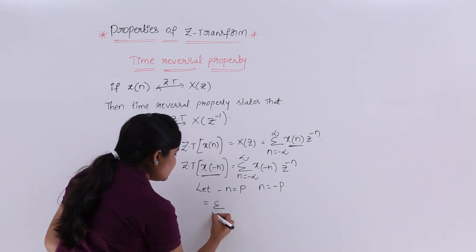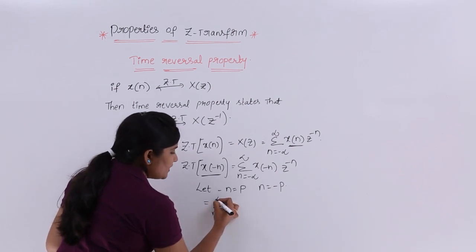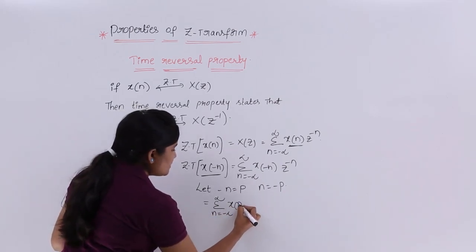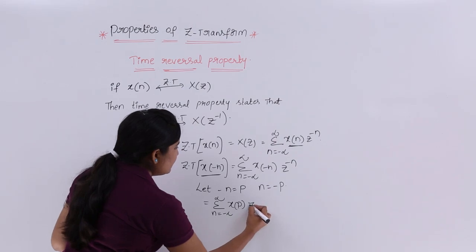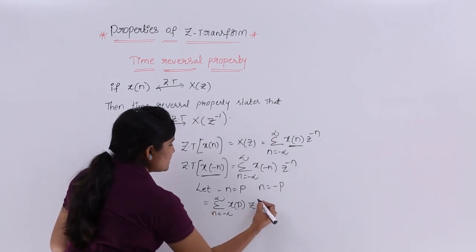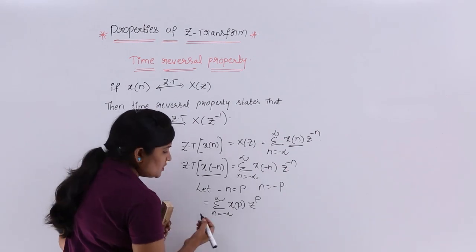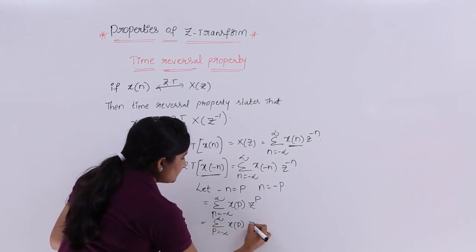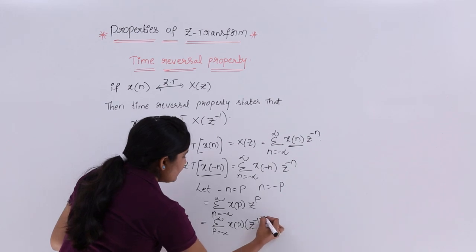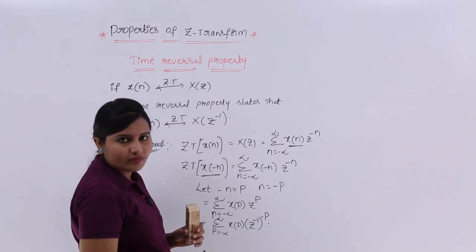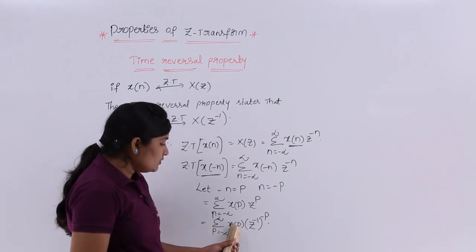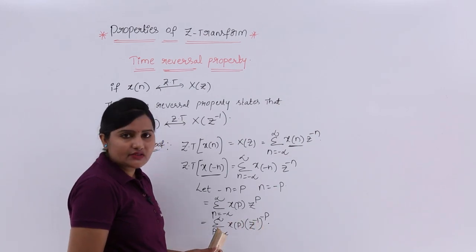After the substitution, the equation changes to: summation from P = -∞ to ∞ of X(P)·(Z⁻¹)^(-P). Since n and P are equivalent dummy variables, we can replace P back with n, giving summation from n = -∞ to ∞ of X(n)·(Z⁻¹)^(-n). This is now in the standard form of a Z-transform equation.